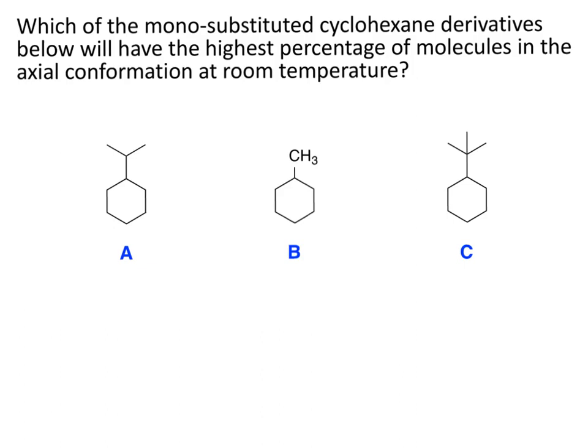This problem, for whatever reason, tends to confuse people. I think it has to do with the wording, or thinking about the less stable conformation as opposed to normally thinking about the more stable conformation. What it's asking is: which of the mono-substituted cyclohexane derivatives below will have the highest percentage of molecules in the axial conformation? This is asking not about the most stable conformation, but about the less stable axial.